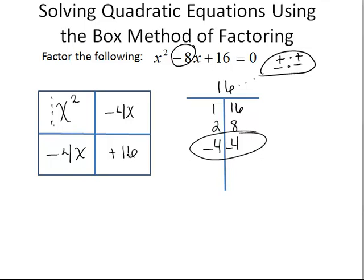The next thing to do is factor out the greatest common factor from the rows and the columns. So x squared and minus 4x, the GCF here is an x. Minus 4x and a plus 16, the GCF here is a minus 4. And it's minus, it's negative, because the contents inside this box that it's touching are also negative.